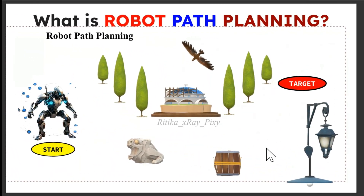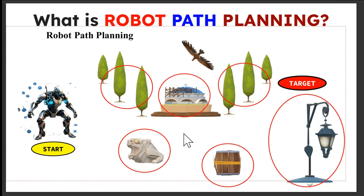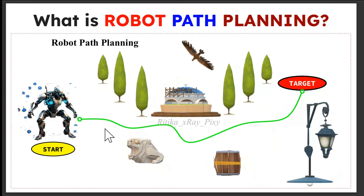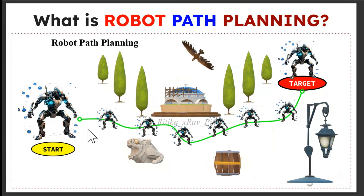Suppose this is our environment and here you can see different obstacles. Our goal is to move this robot in this environment without any collision. In robot path planning, the problem is to determine the robot's next location based on its current location in known or dynamic environments. Robots need to avoid obstacles while moving from the starting point to a target point.